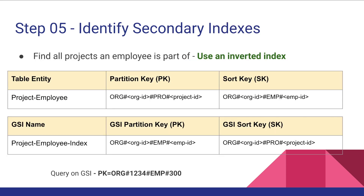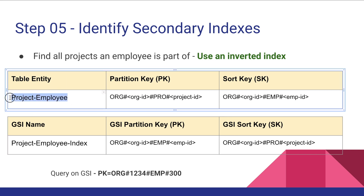After identifying the partition key and sort key for the project employee entity, I isolated only that entity here. The partition key is org hash org ID, then pro hash project ID. We use org hash org ID to denote hierarchy because all projects and employees are part of an organization. For the sort key we have a similar format: org hash org ID, but instead of project we have emp, then the employee ID.